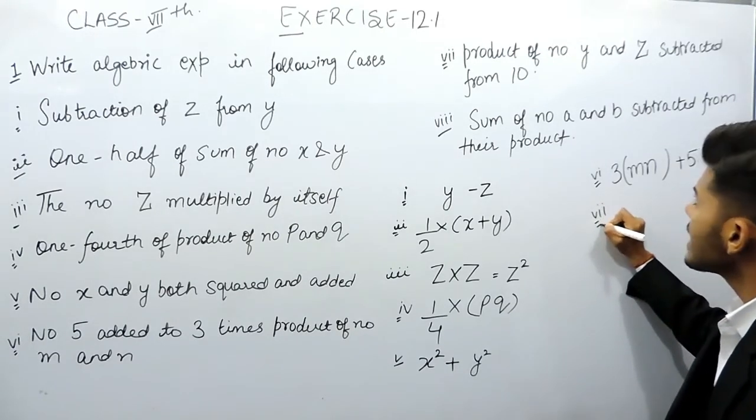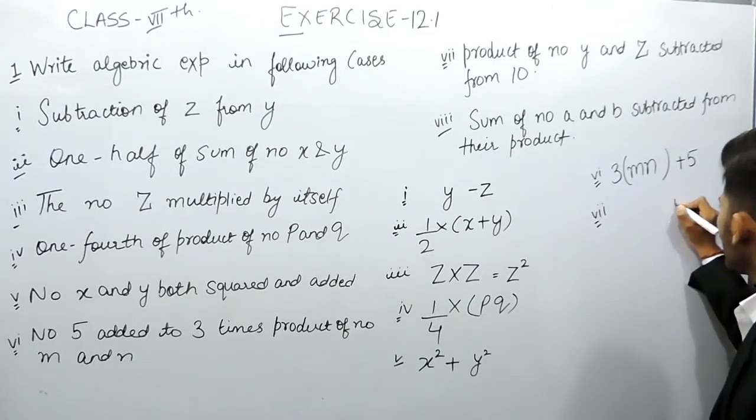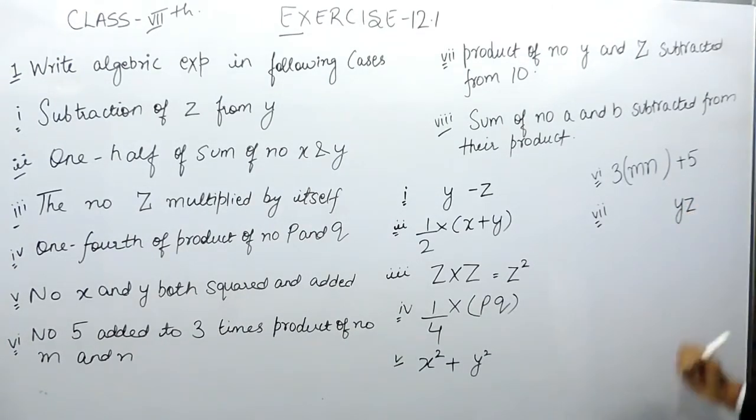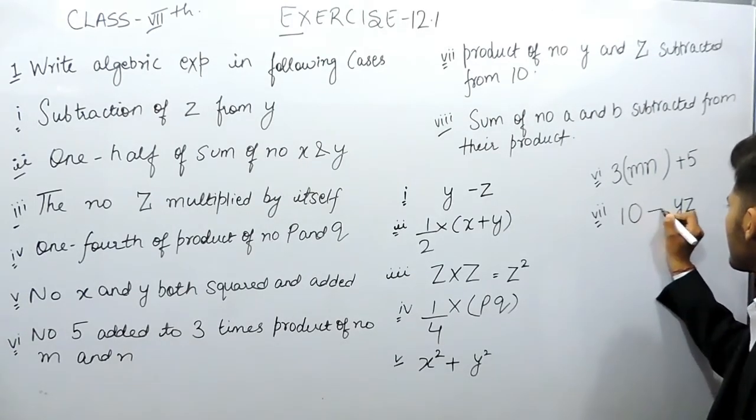Now part 7, it says product of number y and z subtracted from 10. So basically the product of y and z is yz and it is subtracted from 10. So that is 10 minus yz.